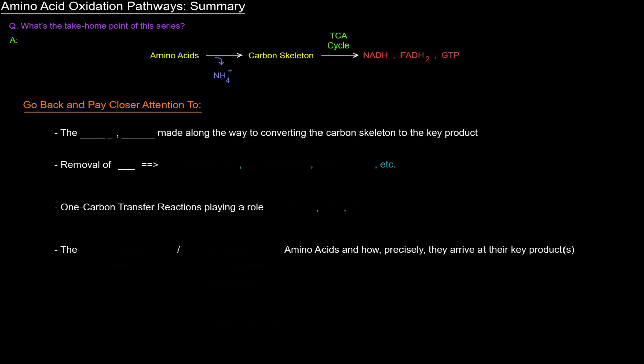One thing that you should pay closer attention to is how we created NADHs and FADH2s along the way to converting the carbon skeleton into the key product. Whatever that key product was, whether it was acetyl-CoA, pyruvate, alpha-ketoglutarate, succinyl-CoA, oxaloacetate, fumarate, and so on.